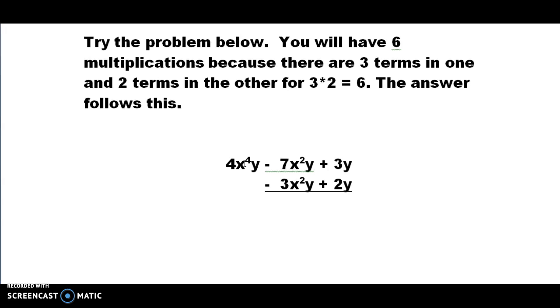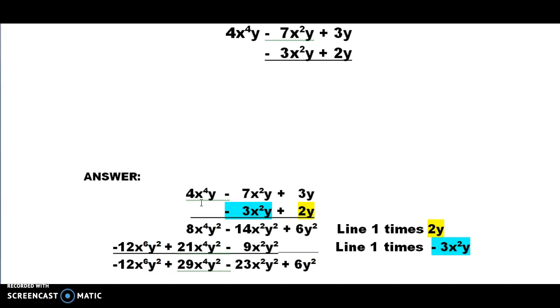So what I'd like you to do is pause the video and try this problem right here. On the top row you have 3 terms and on the bottom row you have 2 terms. So you're going to have 3 times 2 multiplications or 6, and the answer is going to follow this.